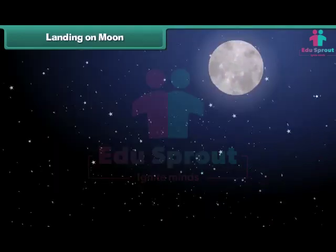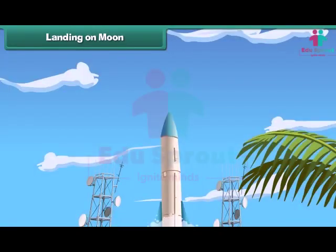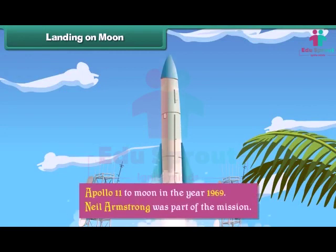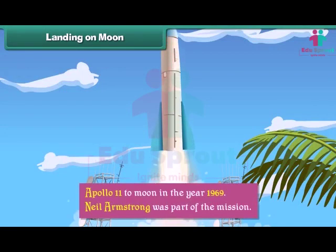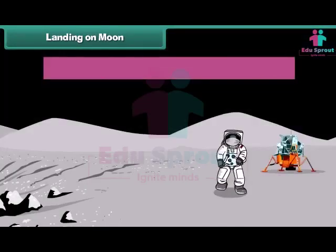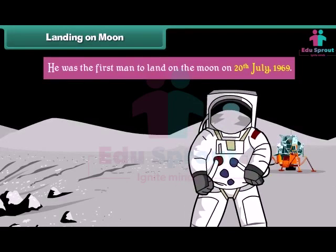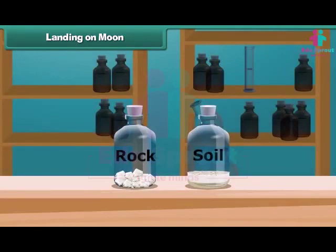Even though life is impossible on the moon, it continues to fascinate scientists. They wanted to learn more about it. Therefore, they sent a mission called Apollo 11 to the moon in the year 1969. Neil Armstrong was part of the mission. He was the first man to land on the moon on 20th July 1969. He performed various experiments on the moon and brought back samples of soil and rock.